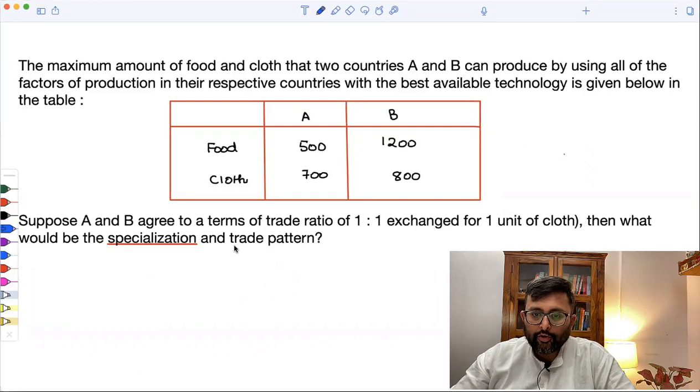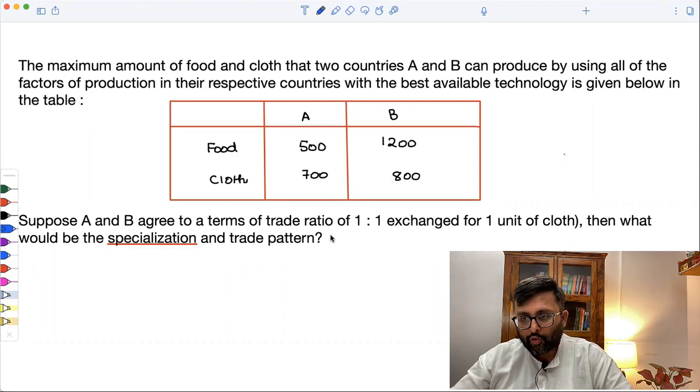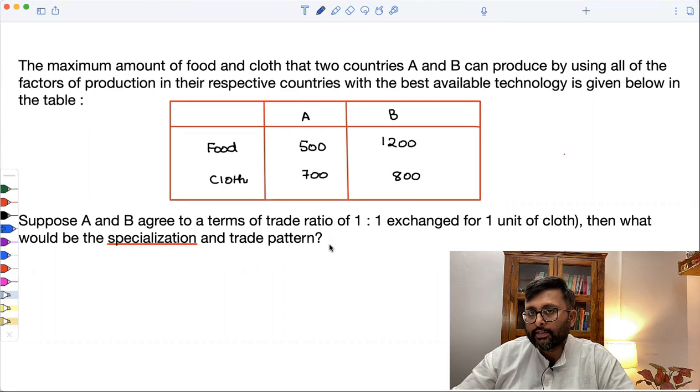Look at this question. Please read it and try to solve it yourself first. The maximum amount of food and cloth that two countries A and B can produce by using all of the factors of production in their respective countries with the best available technology is given below. Suppose A and B agree to terms of trade ratio of 1:1, so one unit of food will be exchanged for one unit of cloth. Then what would be the specialization and the trade pattern?